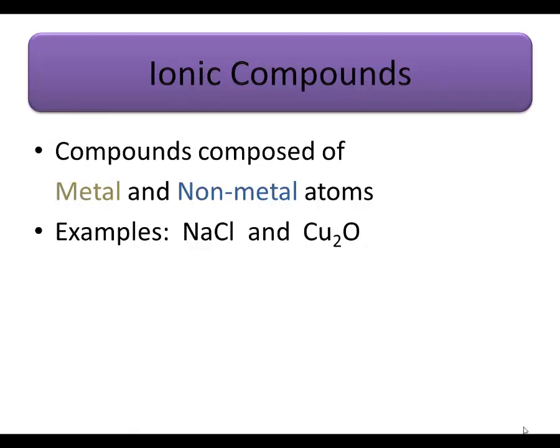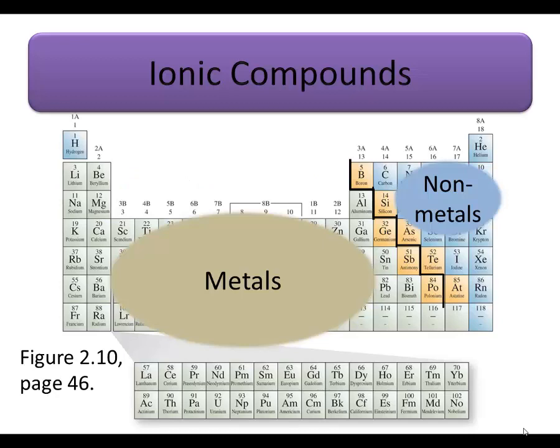Ionic compounds are compounds that consist of at least one metal atom bonded to at least one non-metal atom. Two examples of ionic compounds are sodium chloride, NaCl, and copper oxide, Cu2O. Both of these examples consist of a metal bonded to a non-metal. This is true of virtually all ionic compounds.